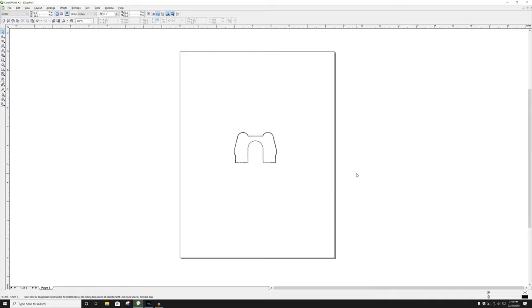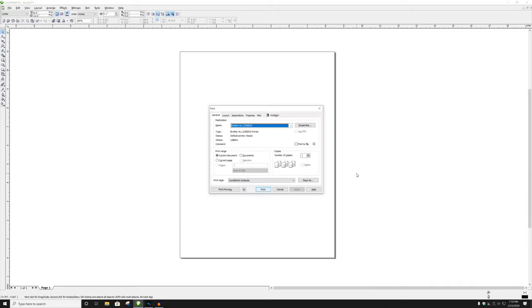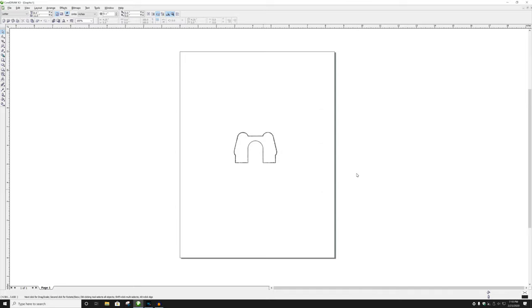We'll do control P again and print. Okay, it's printed out. I'm holding it in my hand, but you can't see that. Let's go to the model.